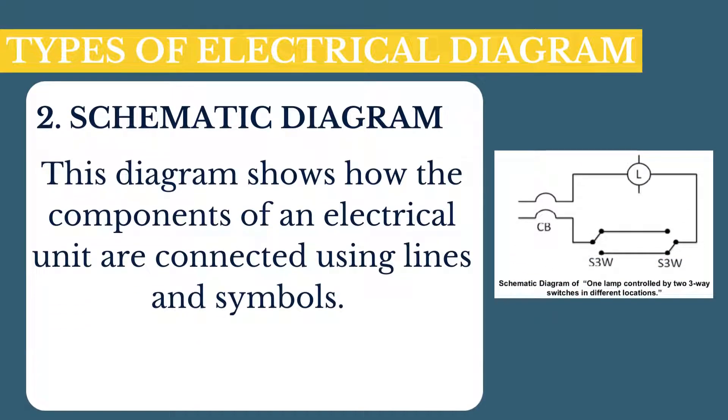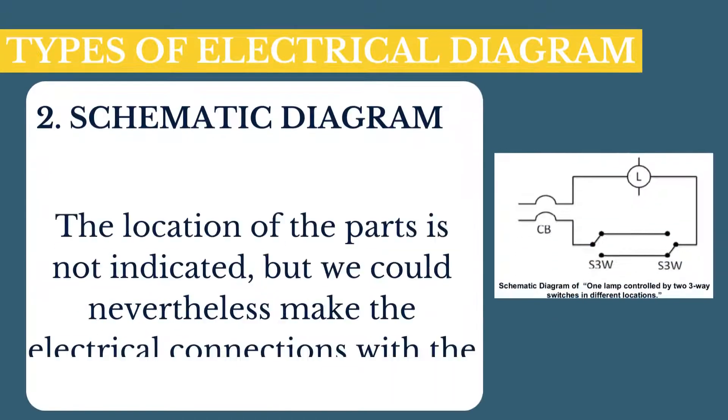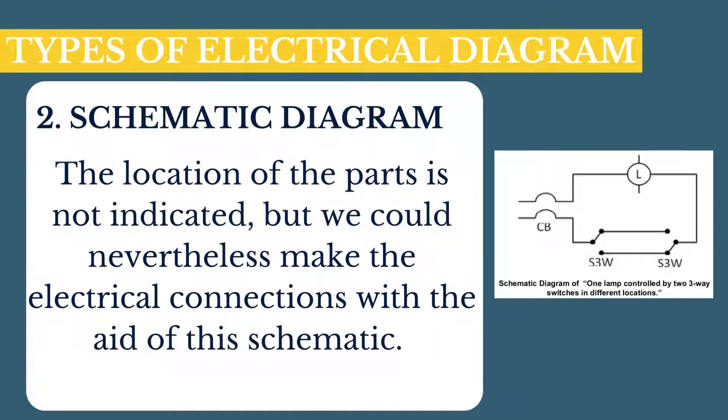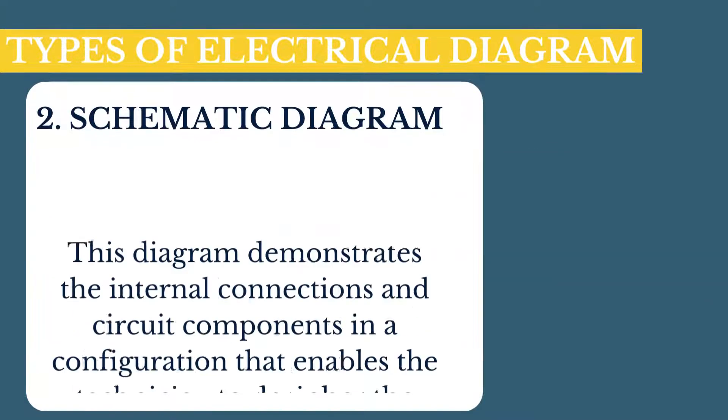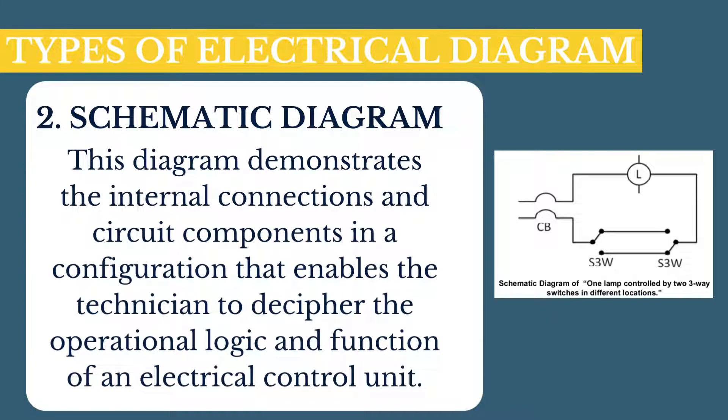Schematic diagram shows how the components of an electrical unit are connected using lines and symbols. The location of the parts is not indicated, but we could nevertheless make the electrical connections with the aid of this schematic. This diagram demonstrates the internal connections and circuit components in a configuration that enables the technician to decipher the operational logic and function of an electrical control unit.